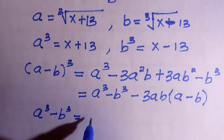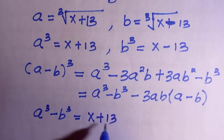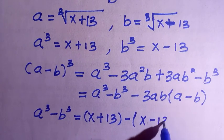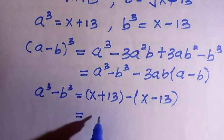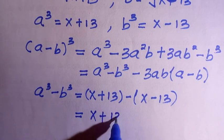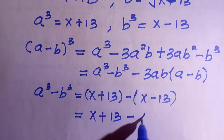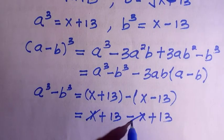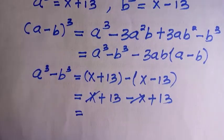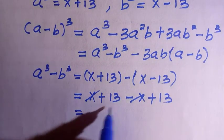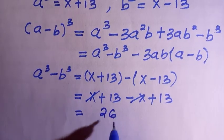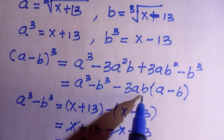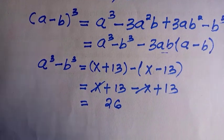So a³ minus b³ becomes (x plus 13) minus (x minus 13). Expanding this: x plus 13 minus x plus 13 — the x's cancel — and 13 plus 13 gives 26. So the value of a³ minus b³ equals 26.